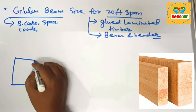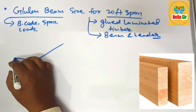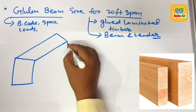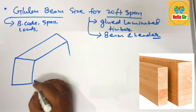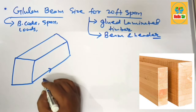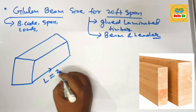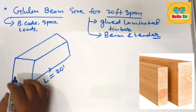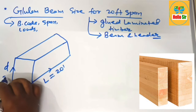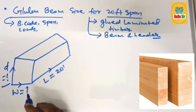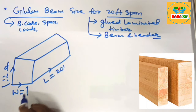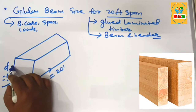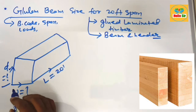You have to understand about what are the depth, width, and length sections of the beam. This is the rough diagram. This is the span length, which is given as 20 feet. This one is the width section of the beam, and this one is the depth section of the beam, which is to be found out. The sizing of a Glulam beam means you have to find out the depth section and width section of the beam.